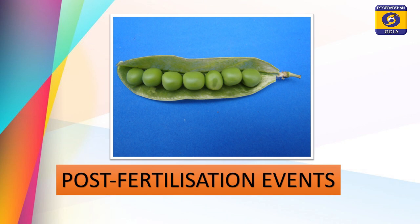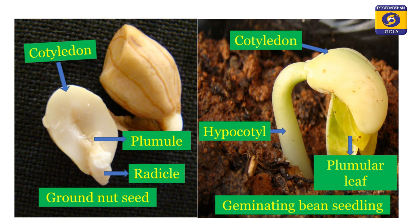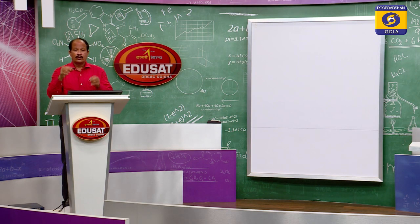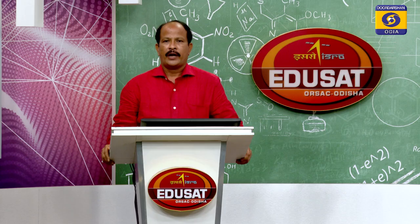Seed plants require a pollen tube for carrying the sperms from the pollen to the egg present in the ovule. The sperms are non-motile — they cannot travel by their own and must be carried by the pollen tube. The male gamete, the pollen grain, lands on the stigma, but the female gamete in the ovule is deep-seated in the ovarian cavity. So the non-motile sperm has to travel a long journey.